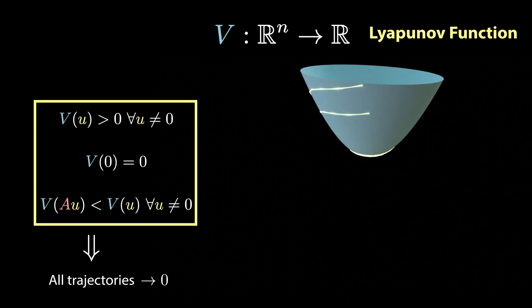The great thing about this idea of Lyapunov is that it is an if and only if statement. A linear dynamical system is asymptotically stable if and only if there exists a Lyapunov function.